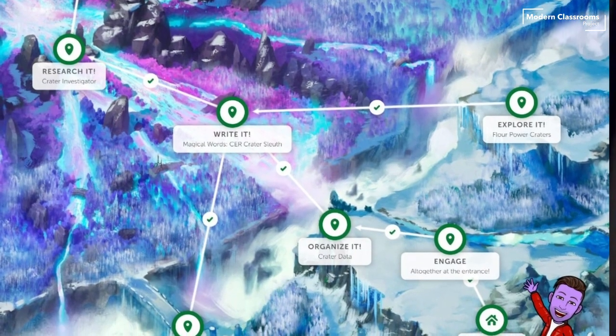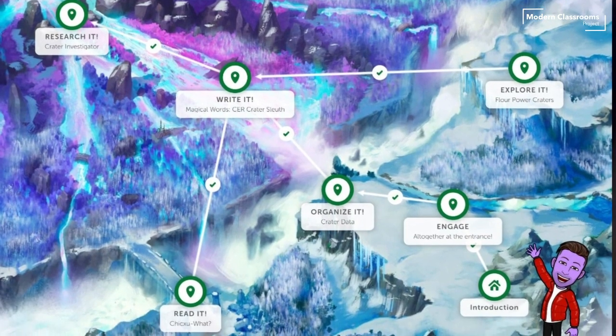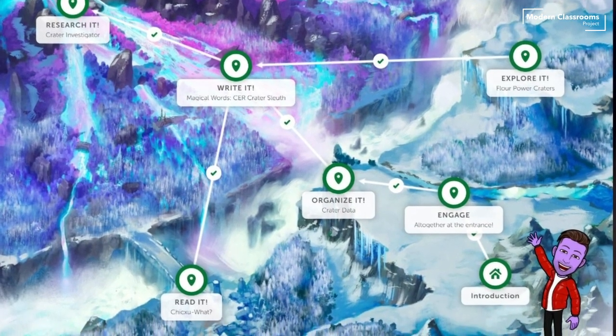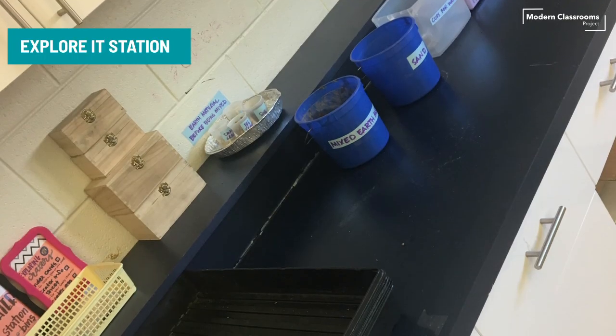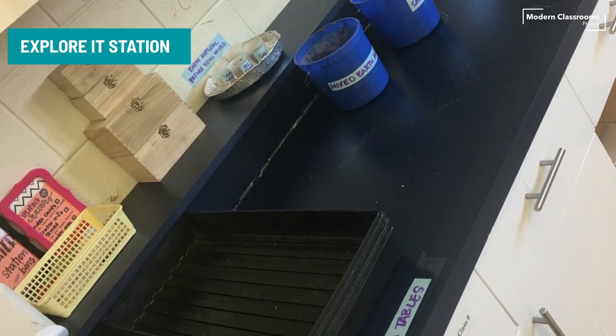At the start of an instructional sequence, after all students participate in an initial engaged learning activity introducing a topic, students then choose how they'd like to further explore that topic by selecting a branching path from our learning map. Students can dive into this new topic at an Explore It! station with a hands-on lab activity.